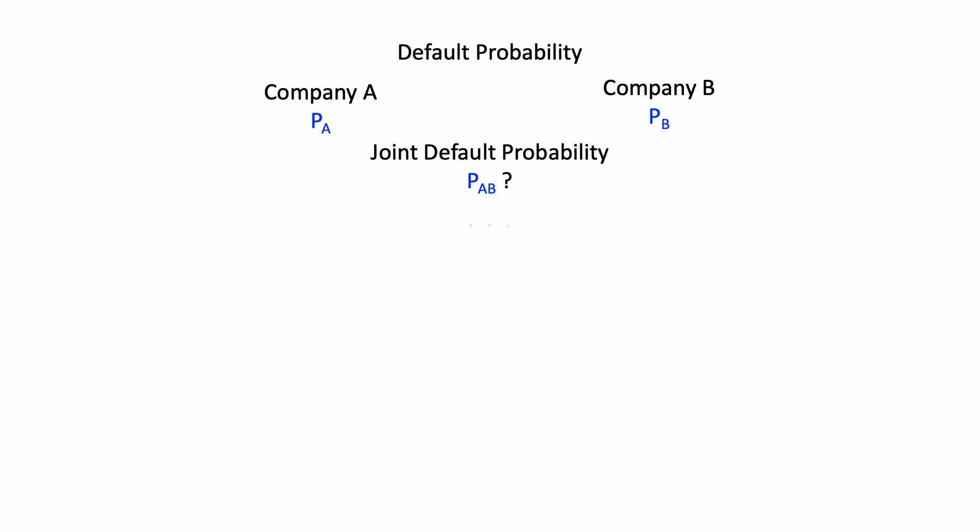The word joint implies we need to consider the correlation between these two events. If they were not correlated at all, then the joint probability would be just the product of the two probabilities, Pa times Pb, since they are independent of each other.